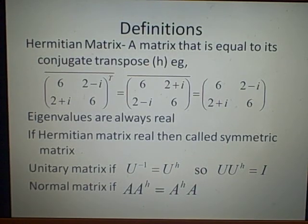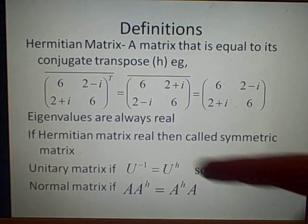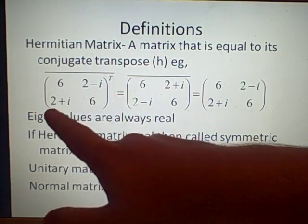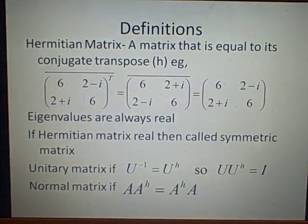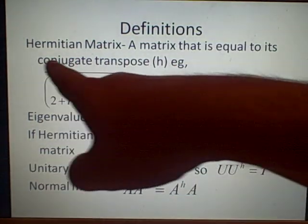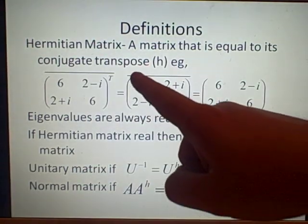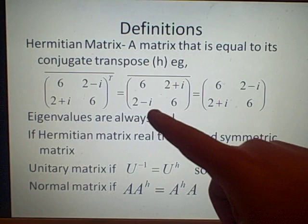A Hermitian matrix, this is a matrix which is equal to its conjugate transpose. And we denote this as A H. So here we've got, let's pretend this is a matrix here, 6, 2 minus i, 2 plus i, 6. If we find the conjugate, so we put a line over the top, and then the transpose, we put a T. First we'll transpose it, so the 6 stay where they are. These things swap place. We've got 2 minus i, 2 plus i.